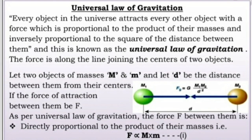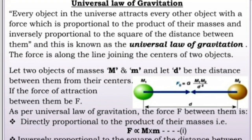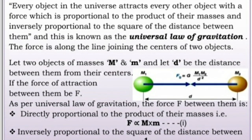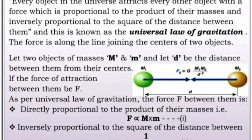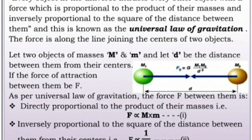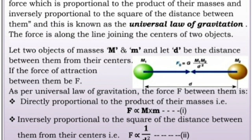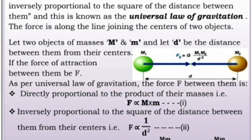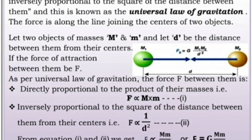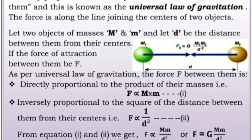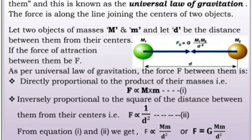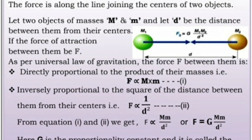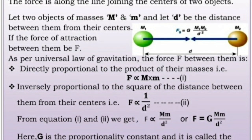The force is along the line joining the centers of two objects. Let the two objects have mass M and m, and let d be the distance between them from their centers. If the force of attraction between them be F, as per the Universal Law of Gravitation, the force F between them is directly proportional to the product of their masses — that is, F is directly proportional to M into m, capital M and small m.